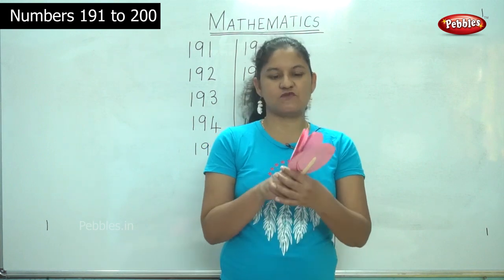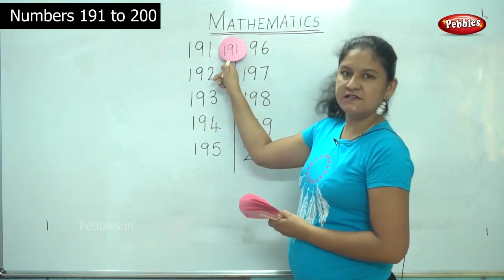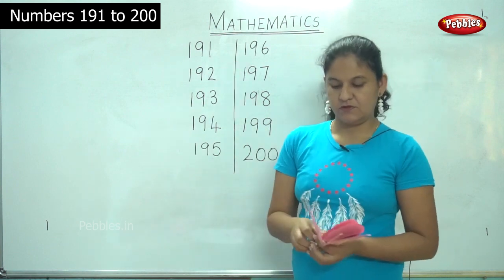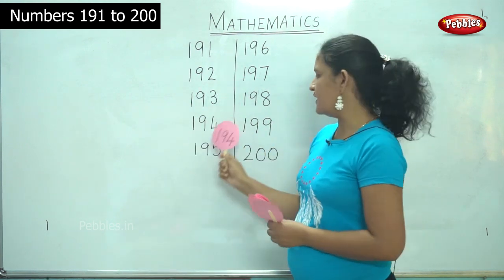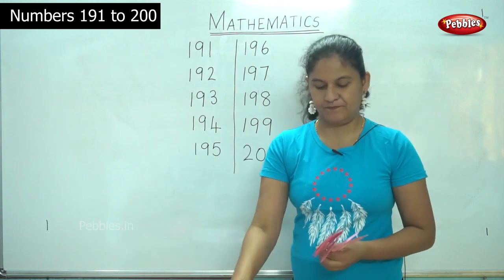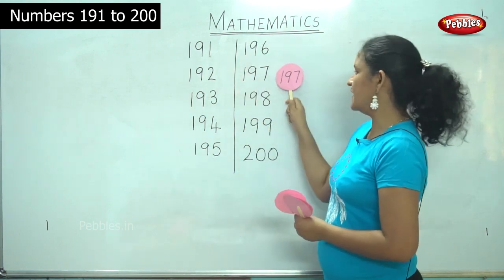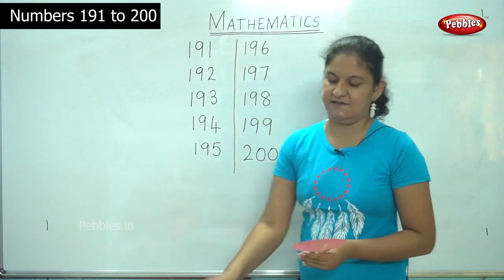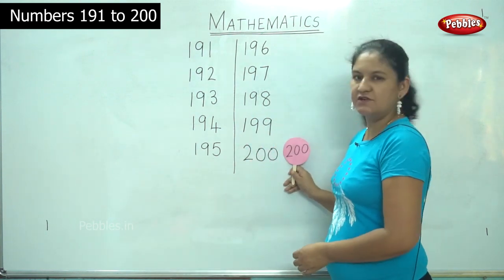Next we will move on to identification of the numbers using the small placards. So it is 191, 191, 191, 192, 192, 193, 193, 194, 194, 195, 195, 196, 196, 196, 197, 197, 198, 198, 199, 199, 199, and the last number 200, 200.